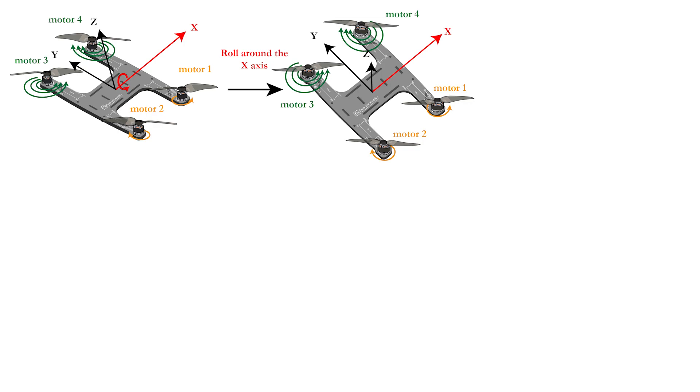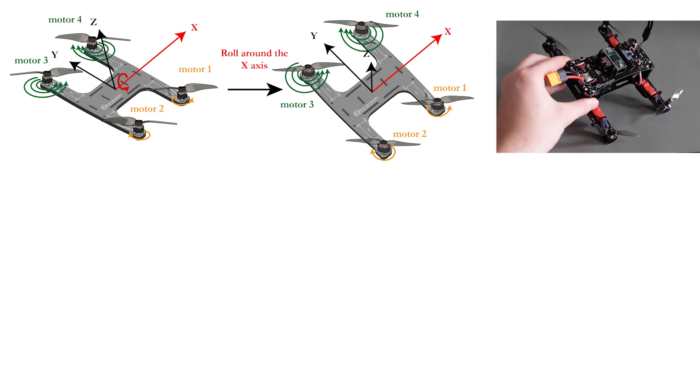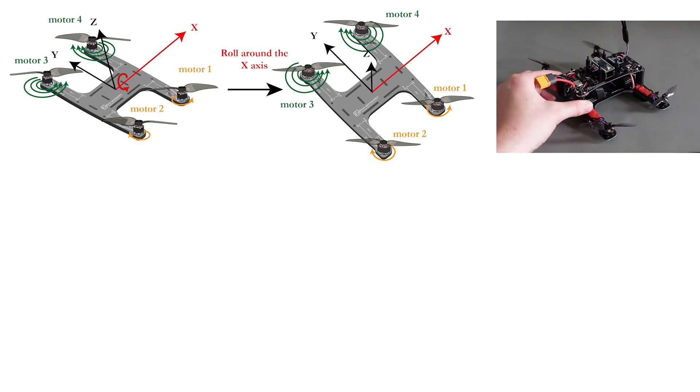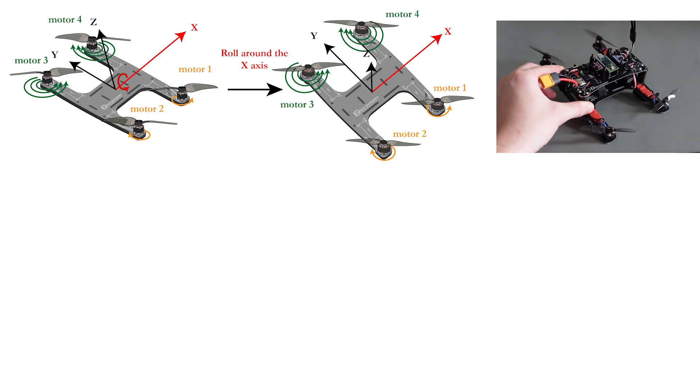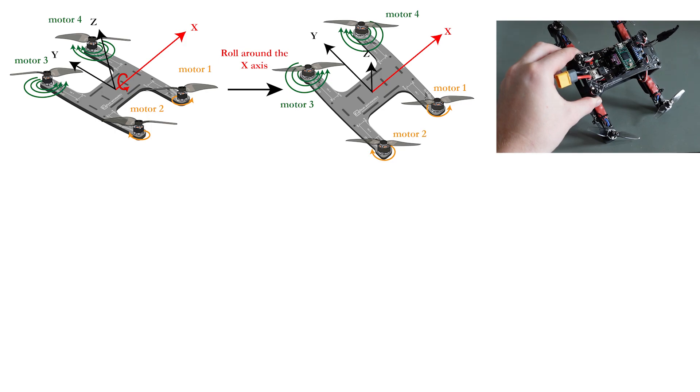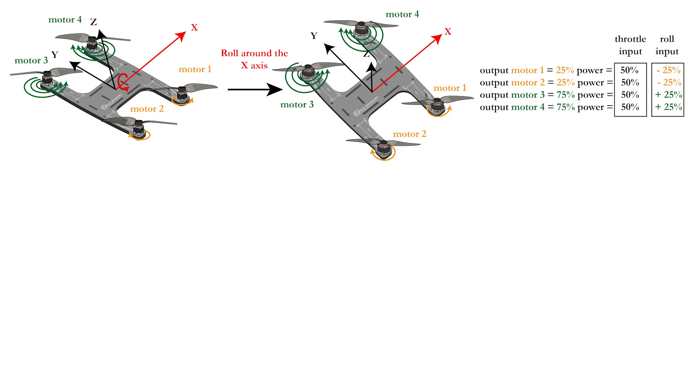Assume you want the drone to stay at the same altitude, but move sideways to the right, which is a roll around the x-axis. The throttle input will be equal to 50% for all motors as you do not change altitude, but in order to initiate this sideward movement, the power output of the left motors, which are motors 3 and 4, should be higher than the power of the right motors, which are motors 1 and 2.